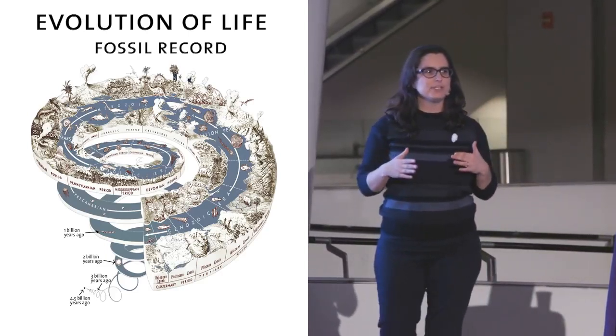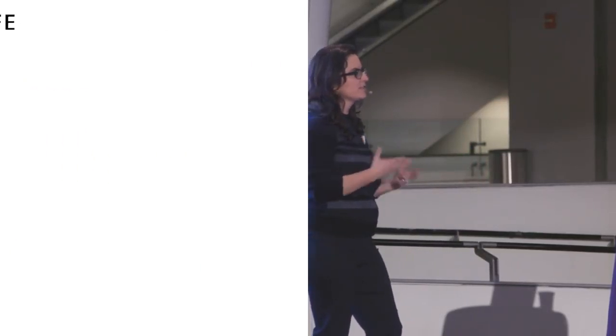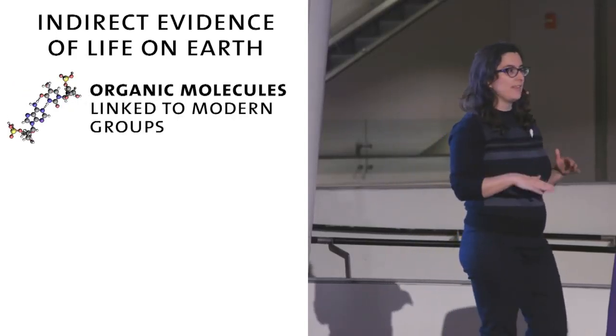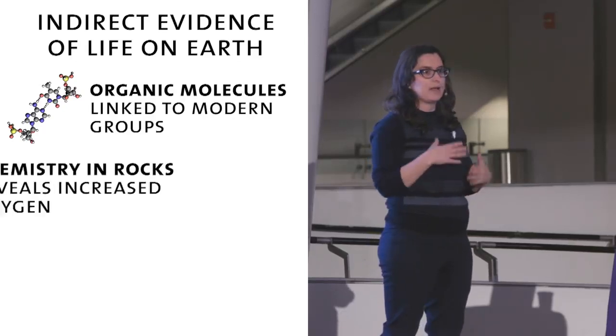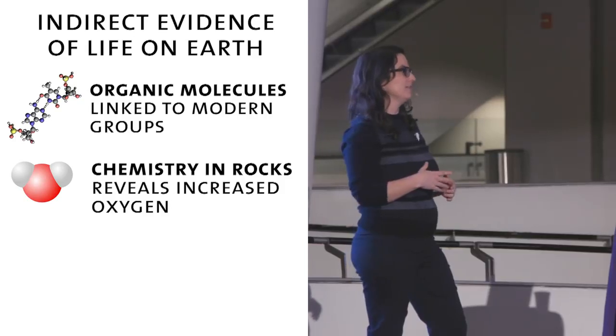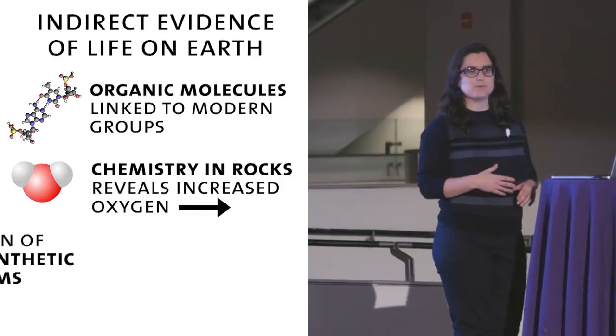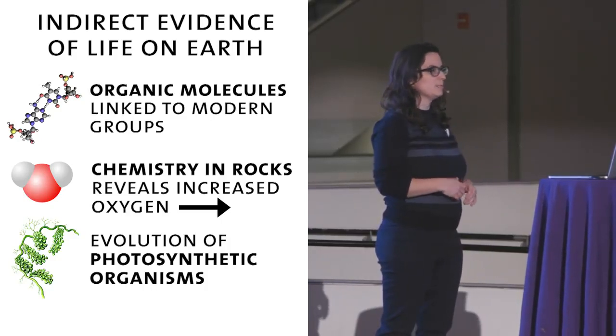In those first four billion years of Earth's history, it doesn't mean there's no evidence, it's just that there's indirect evidence. There are some organic molecules that can be linked to some modern groups. There's also chemistry in the rocks that tells us that the amount of oxygen in the atmosphere was increasing, and that might be associated with the evolution of photosynthetic organisms in the ocean, particularly algae.